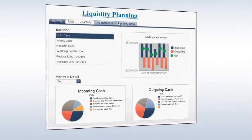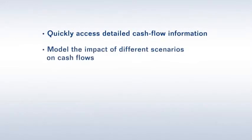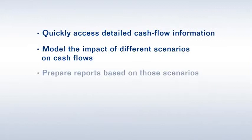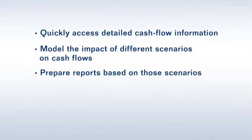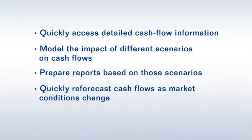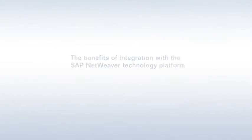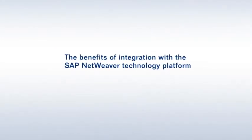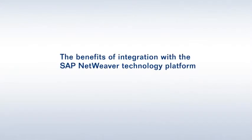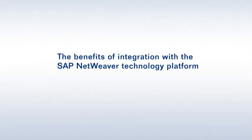The kit also includes pre-built dashboards created using SAP BusinessObjects Dashboard software, licensed separately, so you can easily view and interact with information and make top-down adjustments. You can also quickly access detailed cash flow information, simulate the impact of different scenarios on cash flows, prepare reports based on those scenarios, and re-forecast cash flows as market conditions change. Leveraging the SAP NetWeaver technology platform underlying the software, you can maintain your planning marts and data warehouse in one system.